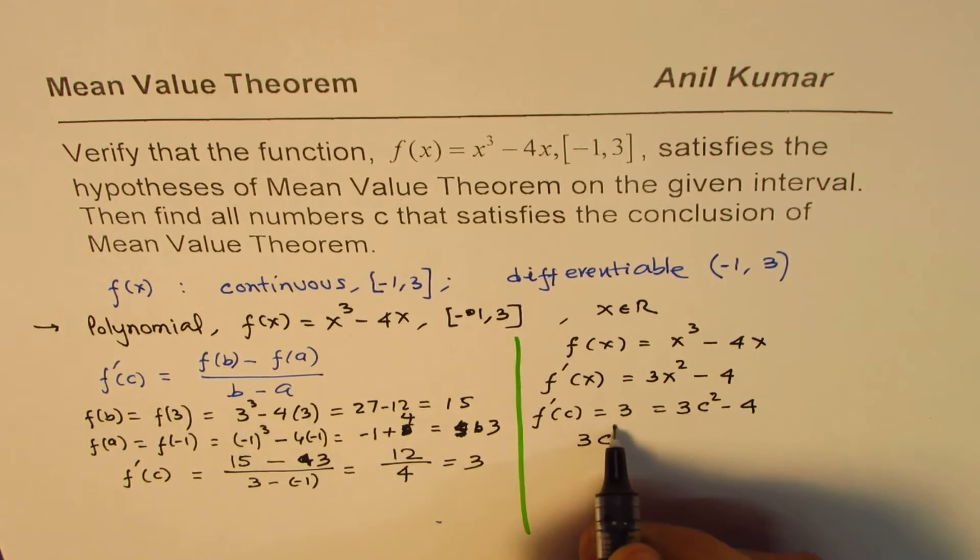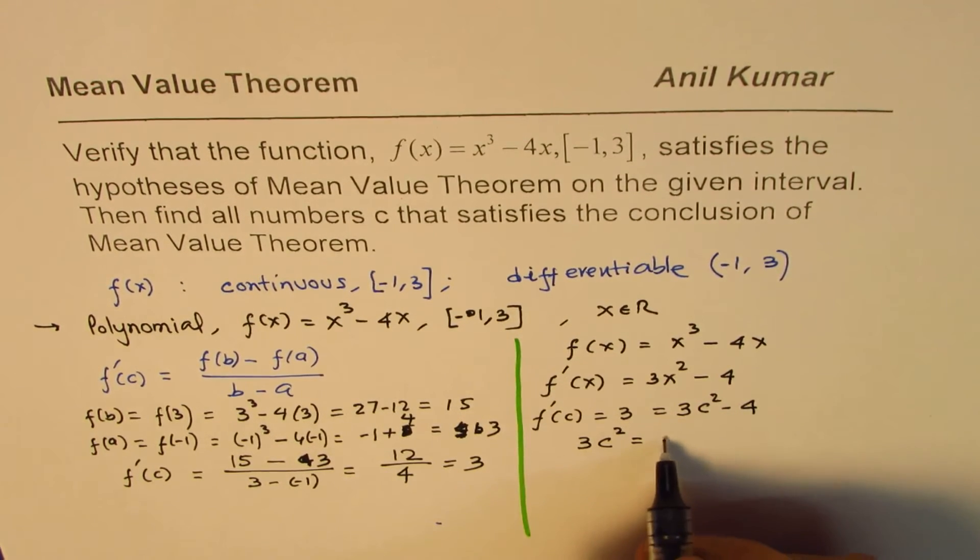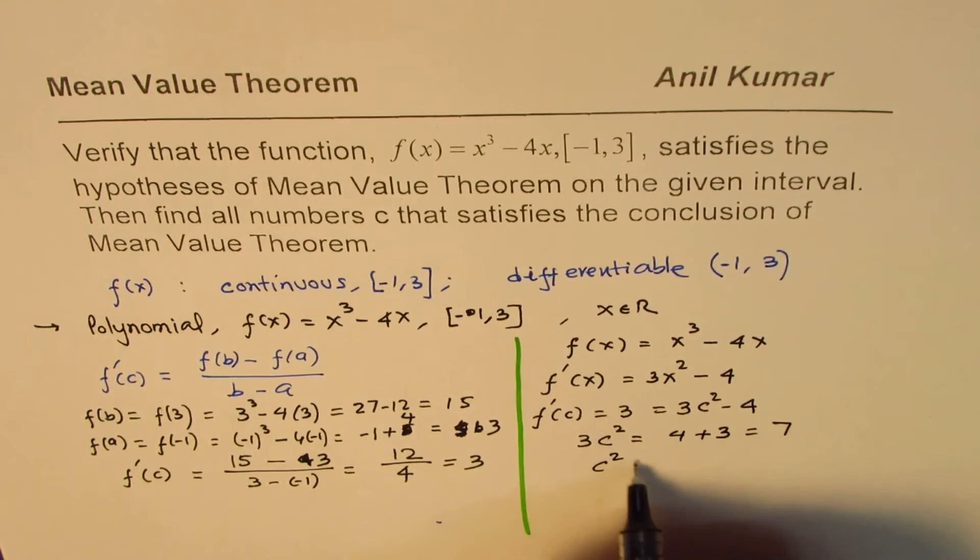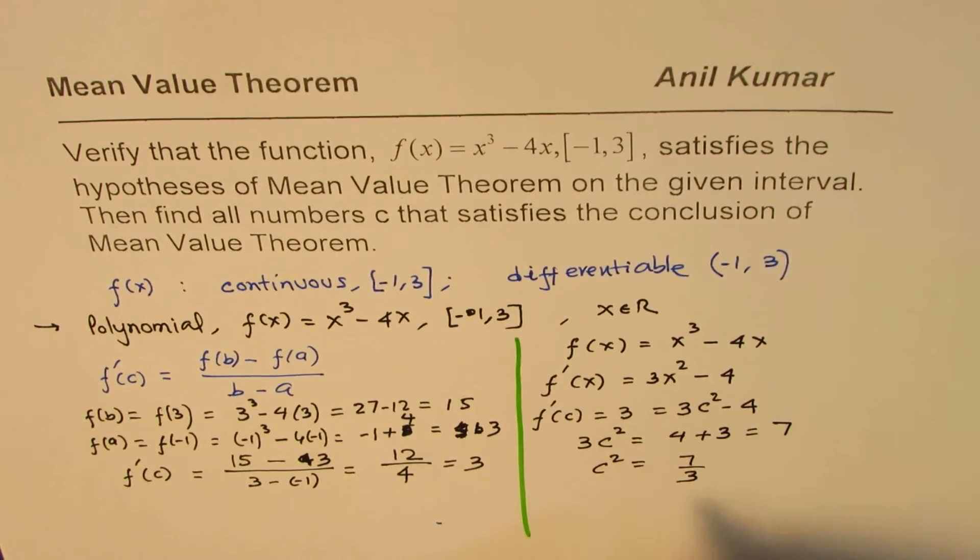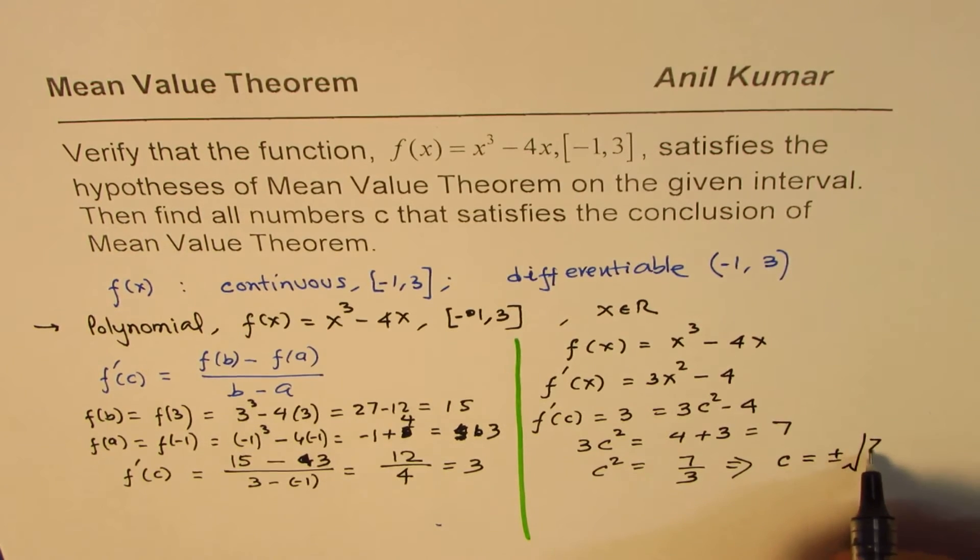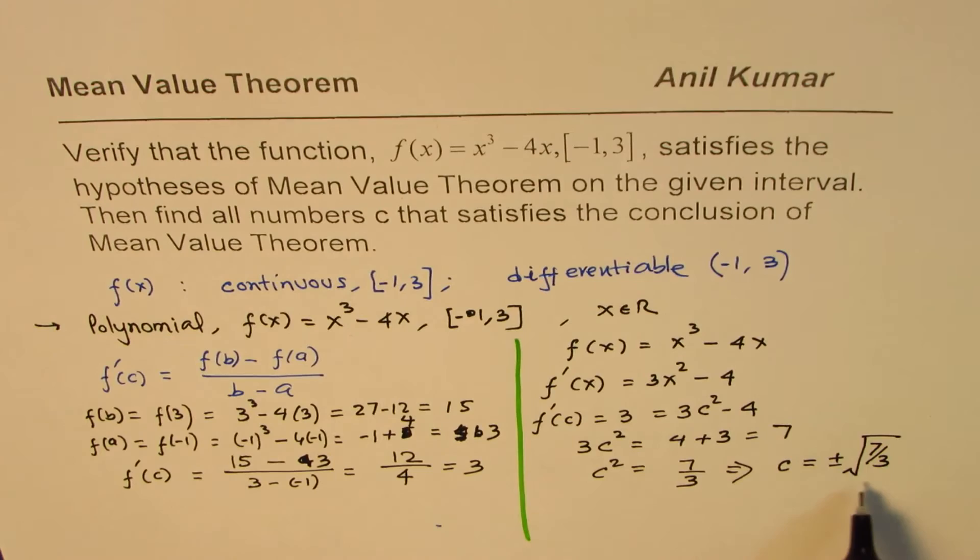So, we'll just rearrange it. So, we can write 3c squared is equals to 4 plus 3, which is 7. So, c squared is 7 over 3, or this implies that c is equal to plus minus square root of 7 over 3. So, that becomes the answer.